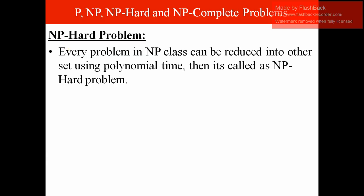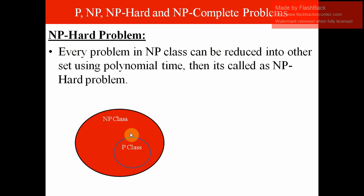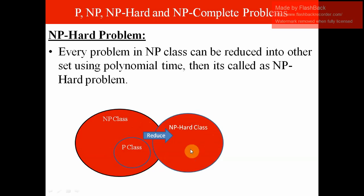Reduction is used in the NP-hard problem definition. NP-hard means every problem in NP class can be reduced to this set of problems. If a deterministic algorithm can solve these problems in polynomial time, then those kinds of problems are called NP-hard. In other words, NP-hard problems are those to which all NP class problems can be reduced, solved via deterministic algorithm in polynomial time.